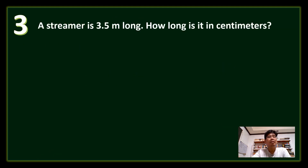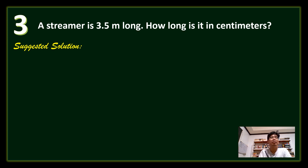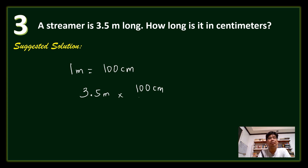Number 3: A streamer is 3.5 meters long. How long is it in centimeters? Since 1 meter equals 100 centimeters, we multiply 3.5 meters by 100, giving us 350 centimeters.